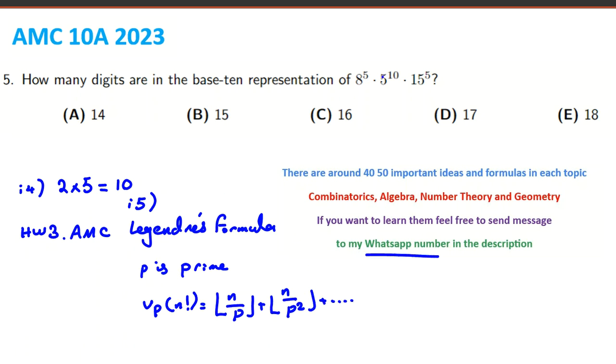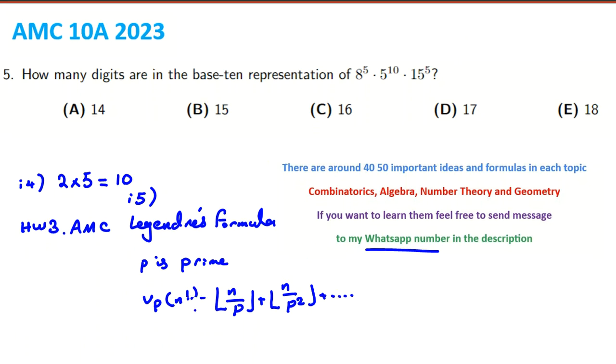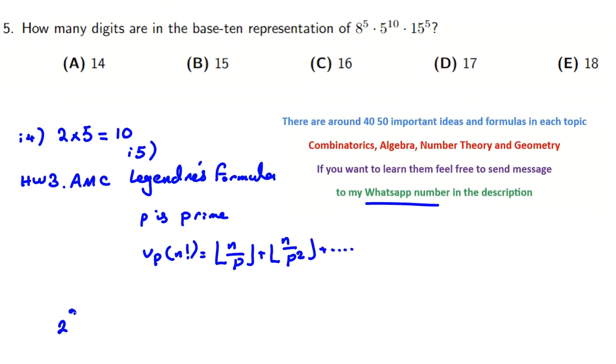Okay, let's solve this one. 8 is what? 8 is 2 cubed, so 2 cubed to the 5 times 5 to the 10. 15 is 3 times 5 to the 5, so the first one is 2 to the 15 times 5 to the 10 times 3 to the 5 times 5 to the 5.